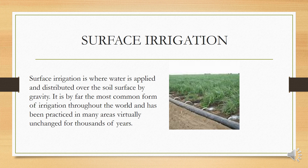Surface irrigation is where water is applied and distributed over the soil surface by gravity. It is by far the most common form of irrigation throughout the world and has been practiced in many areas virtually unchanged for thousands of years. In this method, farmers create channels in horizontal forms and water is provided by gravity force using slope, allowing water to pass through the fields.